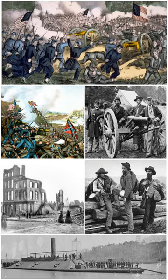The South sent delegations to Washington and offered to pay for the federal properties and enter into a peace treaty with the United States. Lincoln rejected any negotiations with Confederate agents because he claimed the Confederacy was not a legitimate government, and that making any treaty with it would be tantamount to recognition of it as a sovereign government. Secretary of State William Seward, who at the time saw himself as the real governor behind the throne of the inexperienced Lincoln, engaged in unauthorized and indirect negotiations that failed. President Lincoln was determined to hold all remaining Union-occupied forts in the Confederacy: Fort Monroe in Virginia, Fort Pickens, Fort Jefferson, Fort Taylor, and Fort Sumter, located at the cockpit of secession in Charleston, South Carolina.